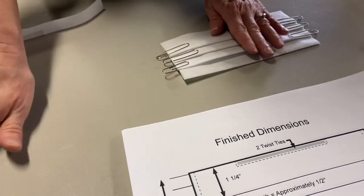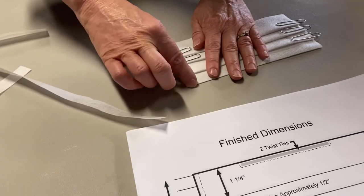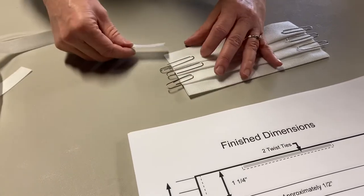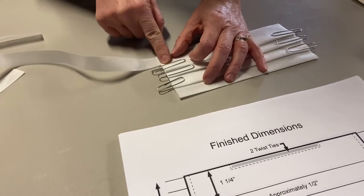Then I turn it over, do the exact same thing. Put the tie in, stitch down and back, take it down, put the last tie in, down and back to reinforce it.